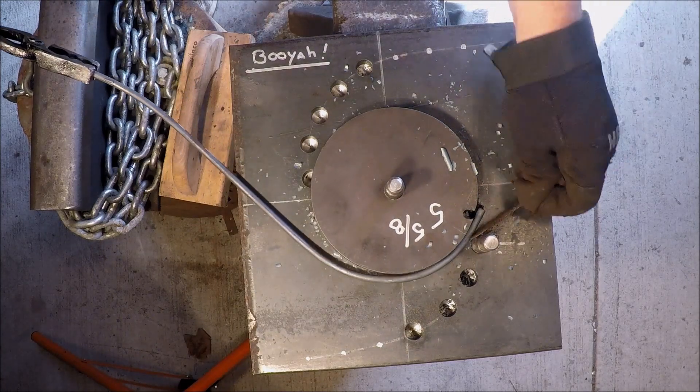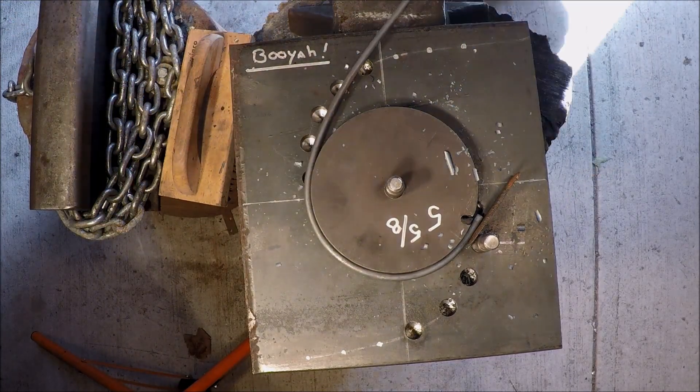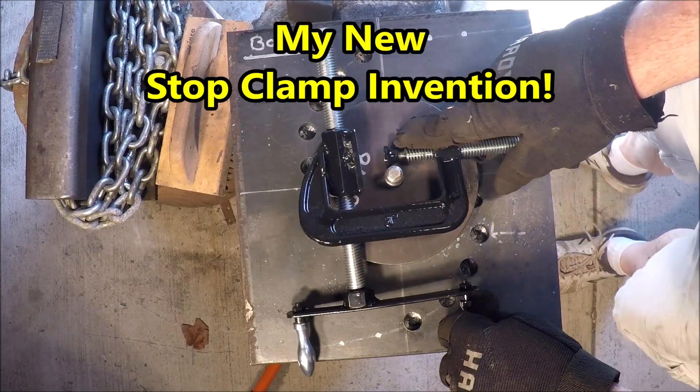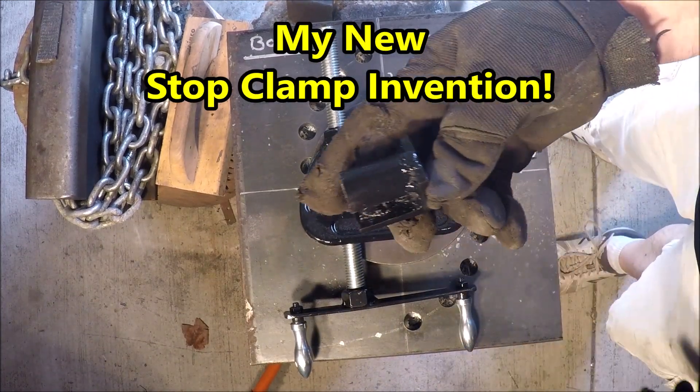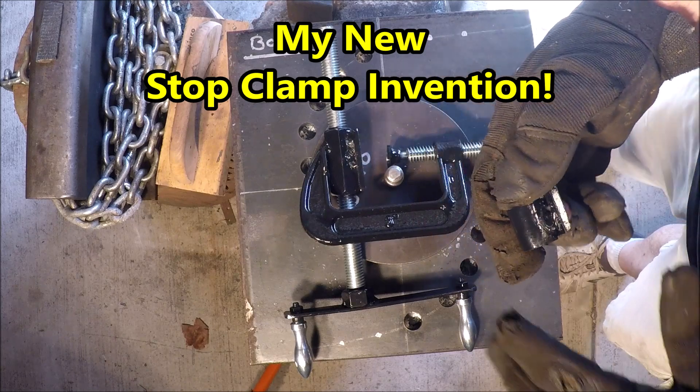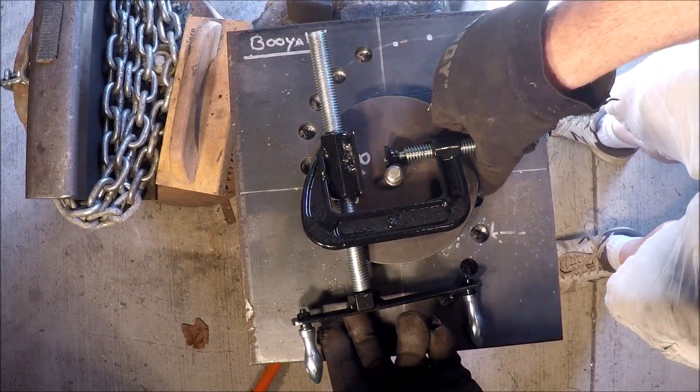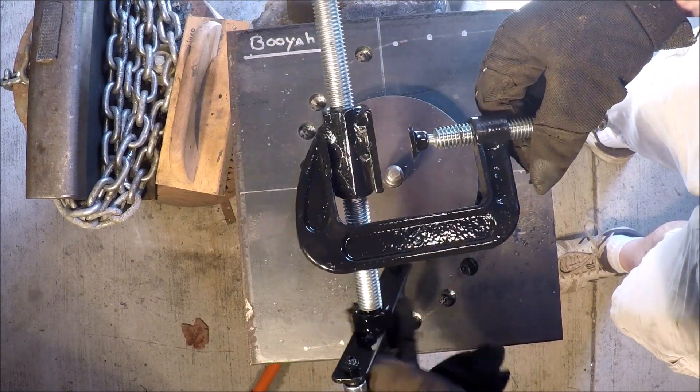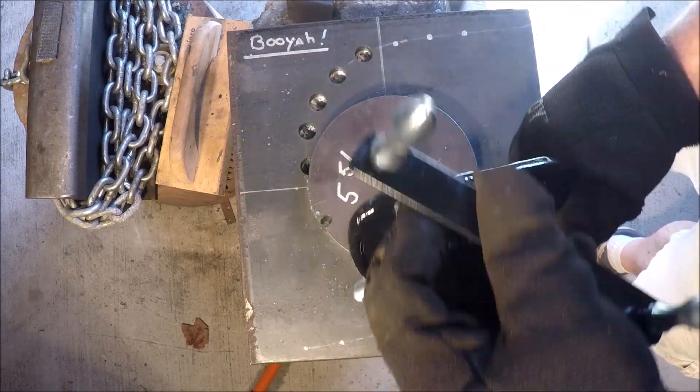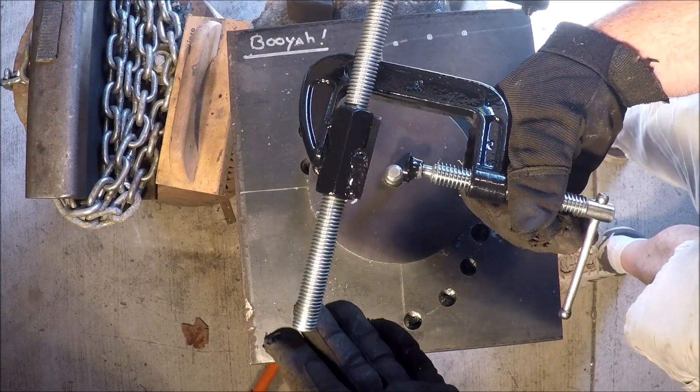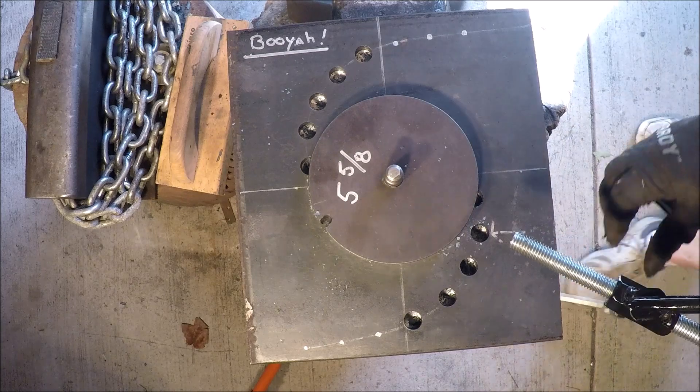Now an alternative is to use like a little wedge there, but instead of that I came up with this new stop clamp invention - at least I've not seen it before. It's just something that you can clamp on to this bending plate and you can have an infinite amount of adjustment and really secure your work up against the die while you're bending.